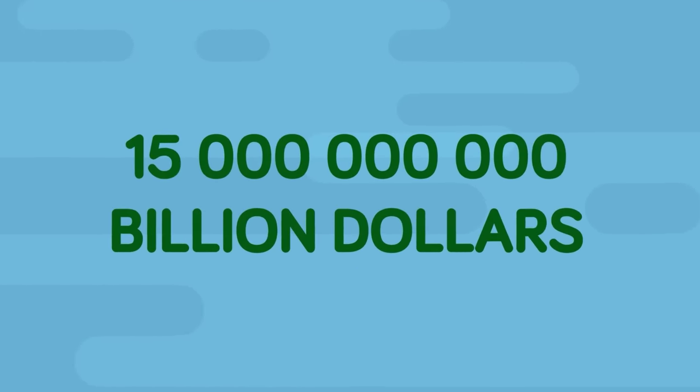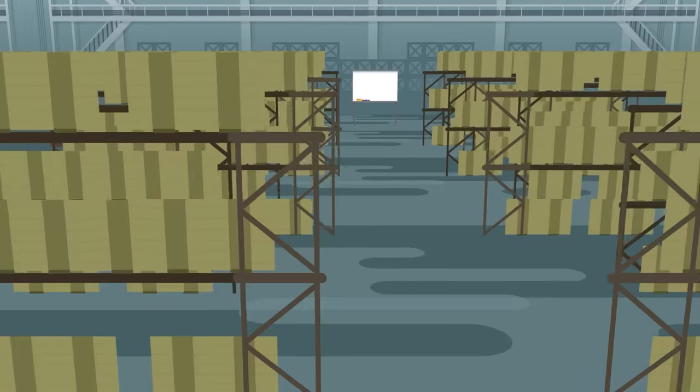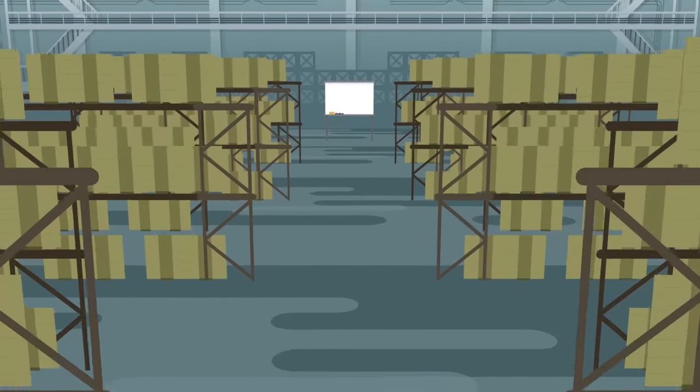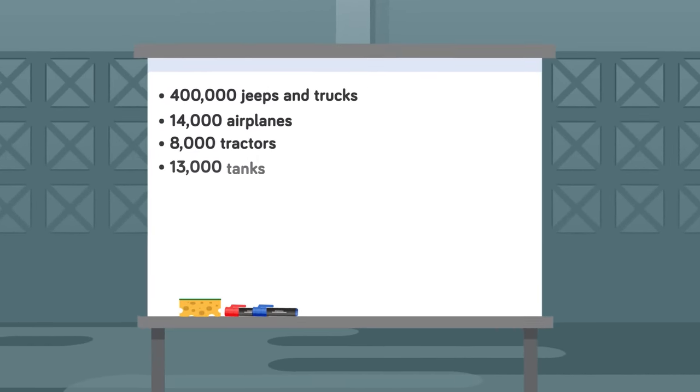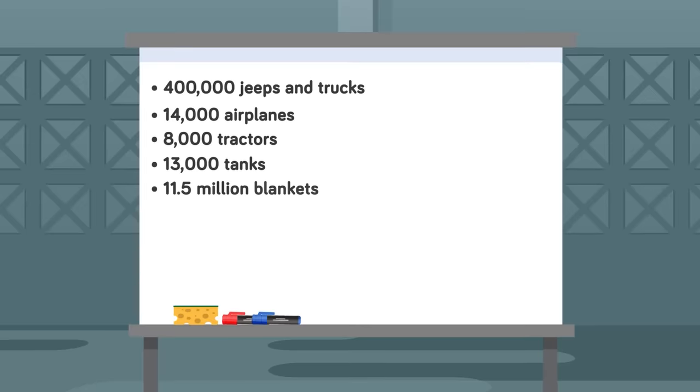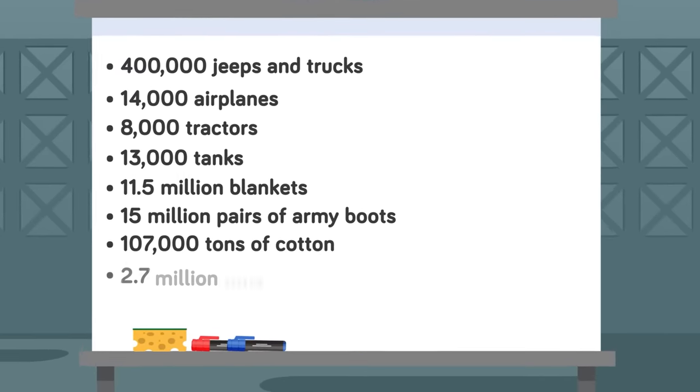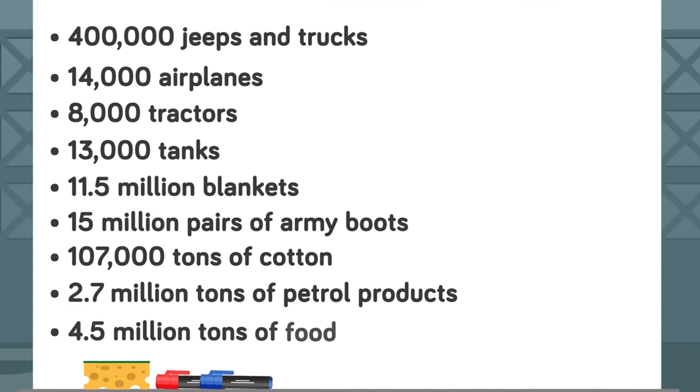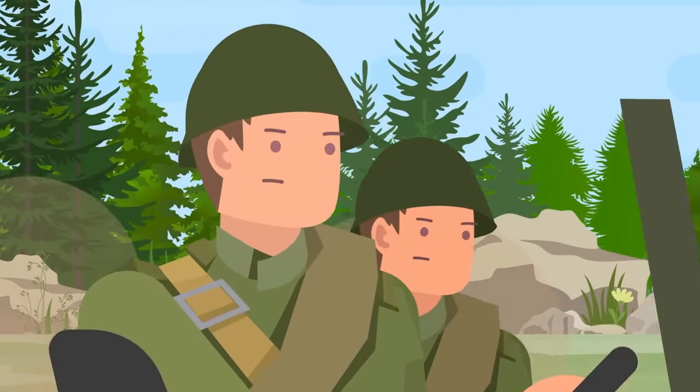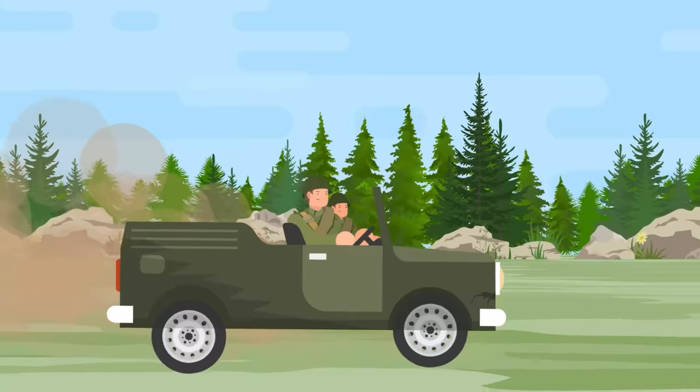By comparison, the US has so far pledged only about $15 billion in total assistance to Ukraine today. The aid the US provided included 400,000 jeeps and trucks, 14,000 airplanes, 8,000 tractors, 13,000 tanks, 1.5 million blankets, 15 million pairs of army boots, 107,000 tons of cotton, 2.7 million tons of petrol products, and 4.5 million tons of food. At one point, nearly every truck the Soviets operated was American, and nearly every Soviet soldier was clothed thanks to America.